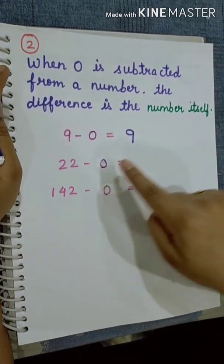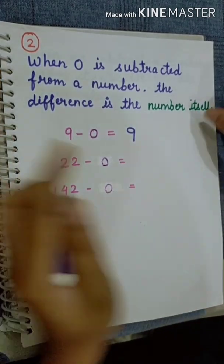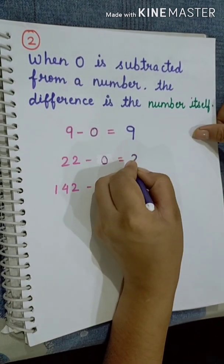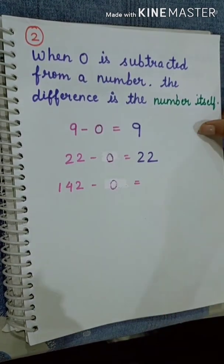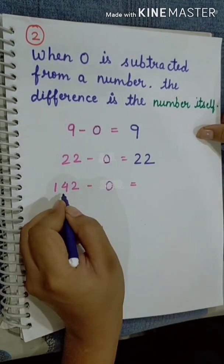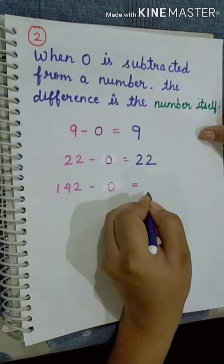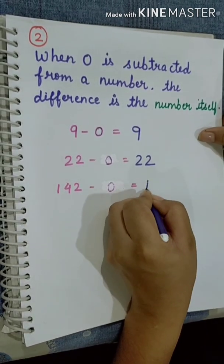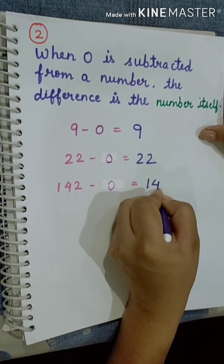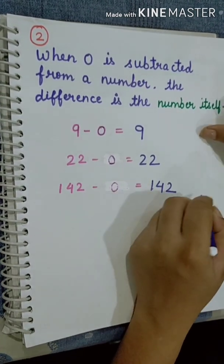22 minus 0 is equal to 22. 142 minus 0 is equal to 142.